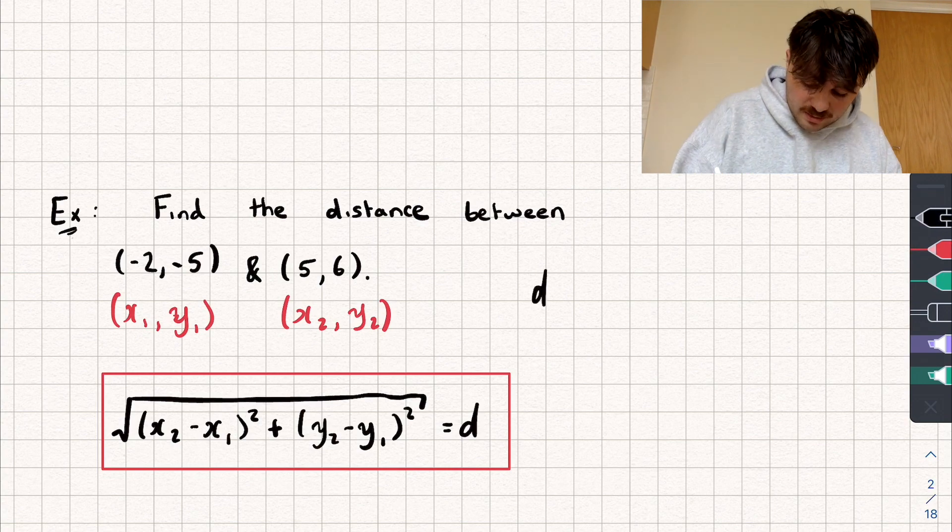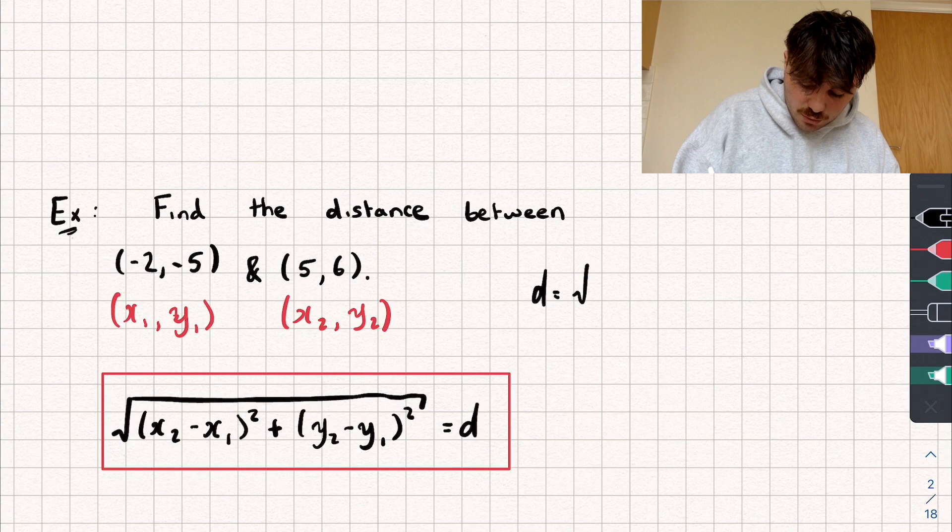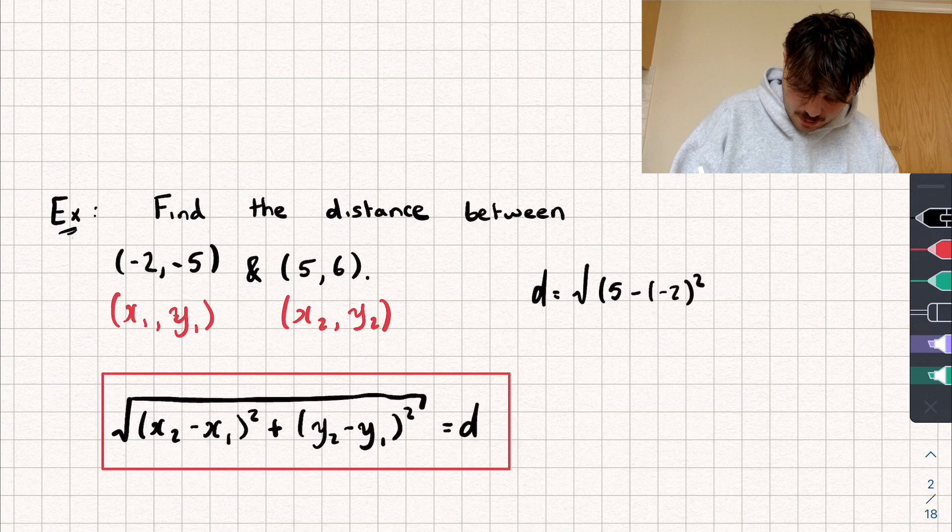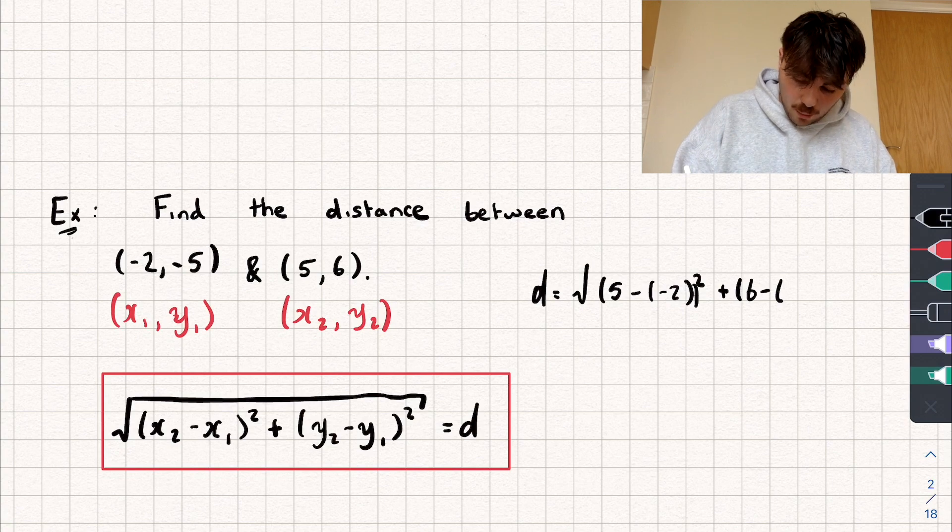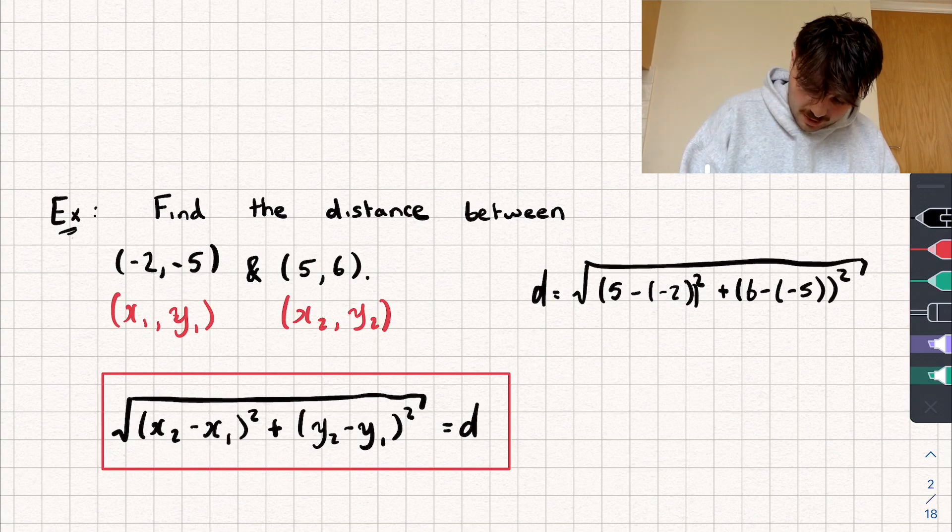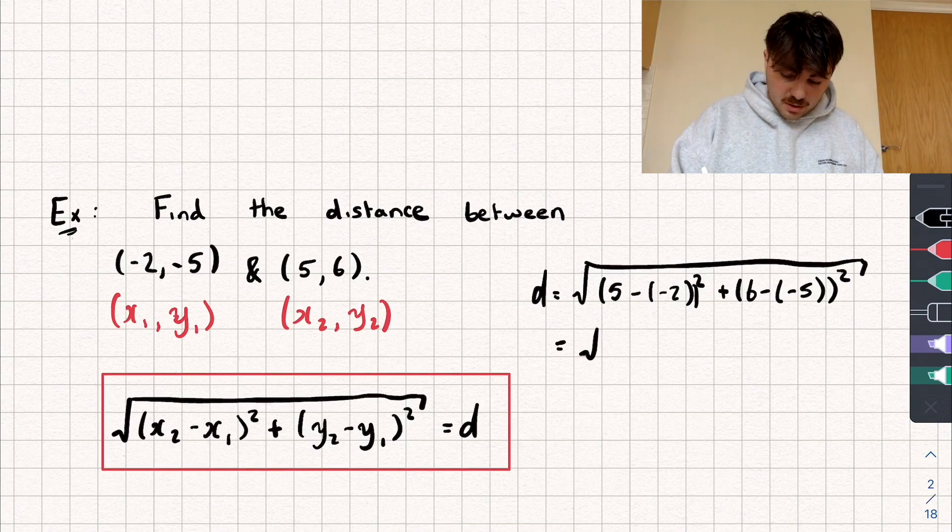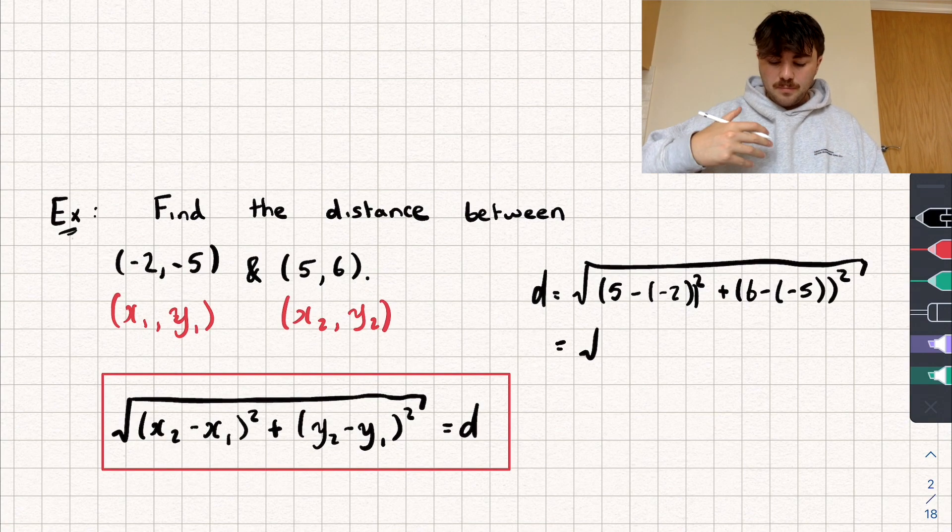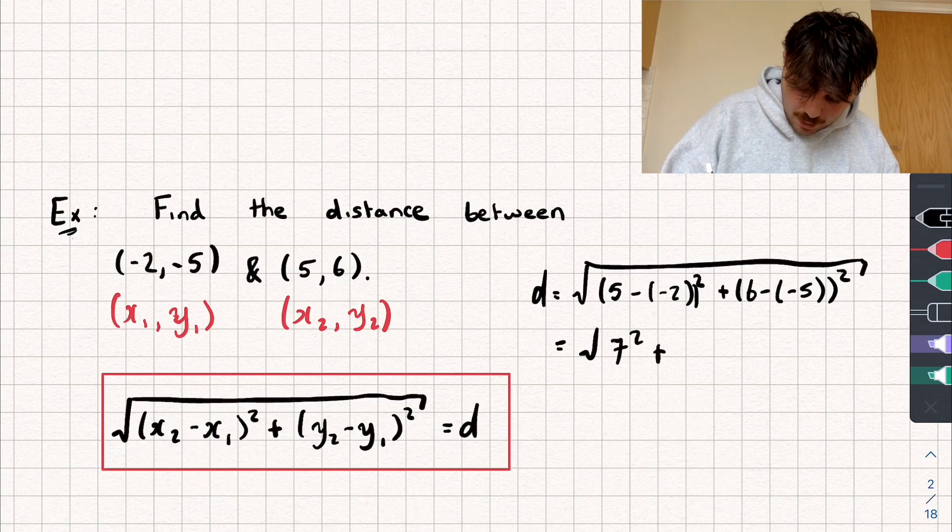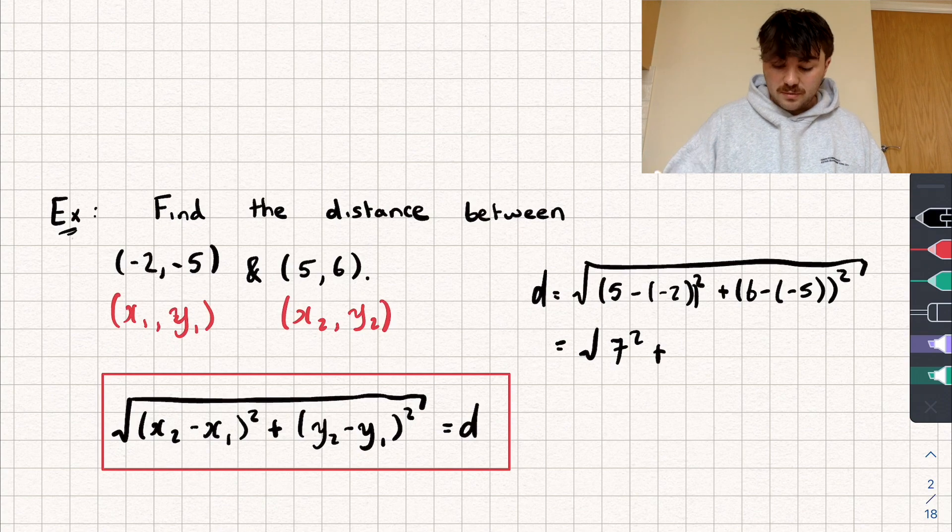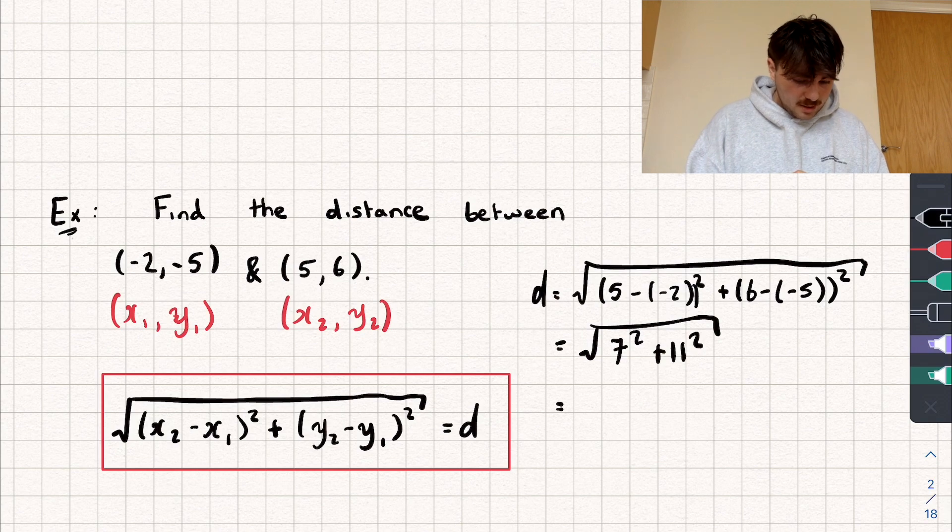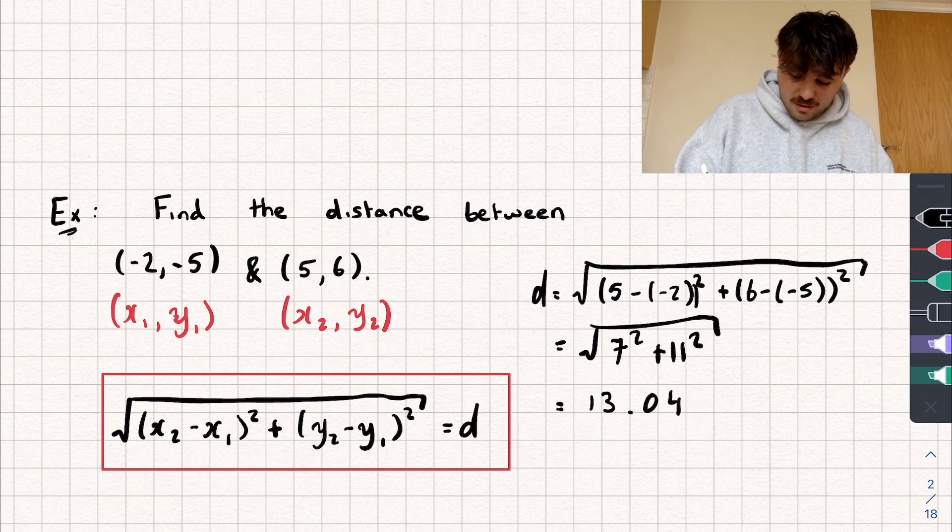Let's now put everything into our formula. So the distance between them is equal to the positive square root of my x2, which is 5, minus my x1, which is -2, and that's all squared. Then we're going to add on to that my y2, which is 6, subtract my y1, which is -5, and that's all squared. I'm going to take the square root of all of that. Let's simplify it. So we're going to get the square root of 5 subtract negative 2, which is just 5 plus 2, so 7 squared, plus 6 subtract negative 5, which is the same as 6 plus 5, so plus 11 squared. I'm going to do that in my calculator, square root it, and we get an answer of the distance between those two points as 13.04.